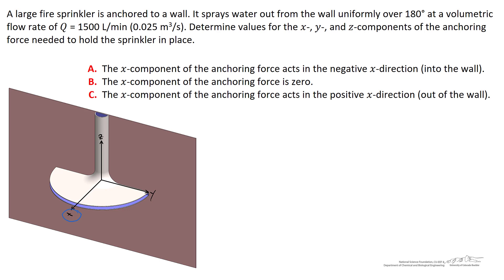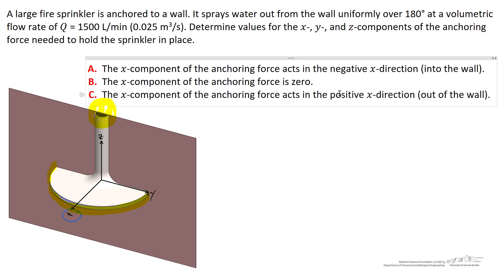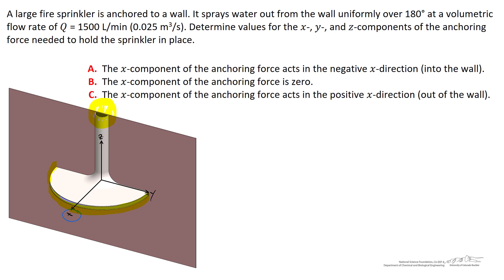Is there a component of anchoring force in the x direction, and if so, does it act into the wall (negative x), out of the wall (positive x), or is it zero? Looking at the rate at which x-momentum enters the control volume at the highlighted entrance region, we see there is no x component of momentum entering — all momentum is in the negative z direction at the entrance. However, at the exit of the control volume around the front face, there is an x component of momentum acting in the positive x direction. So there must be a component of the anchoring force acting in the positive x direction, out of the wall, turning the fluid from directly downward to some direction out of the wall.